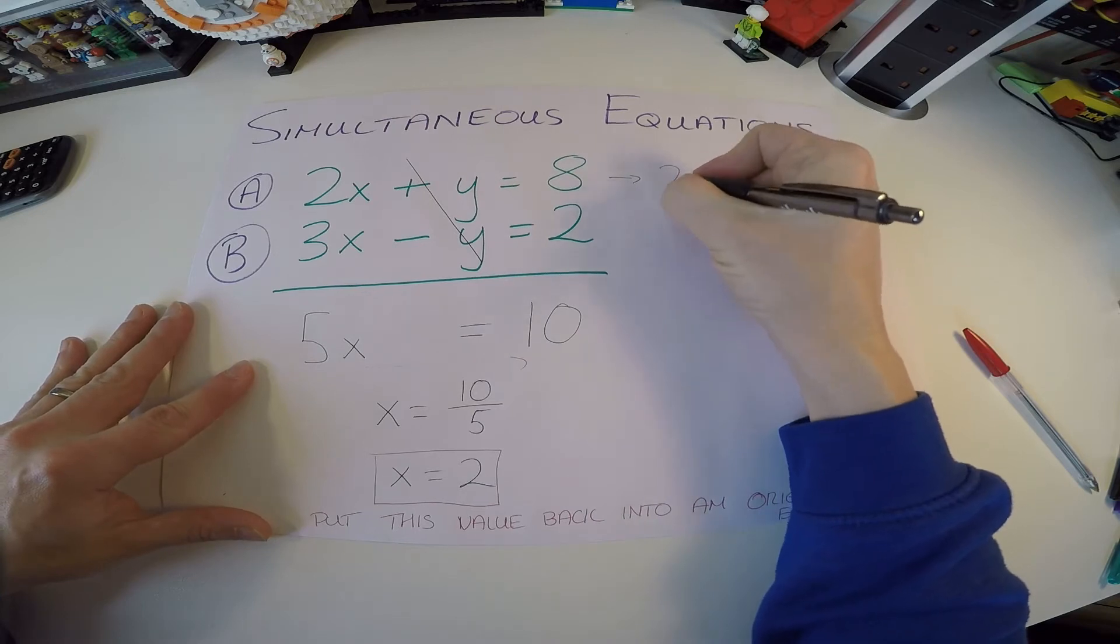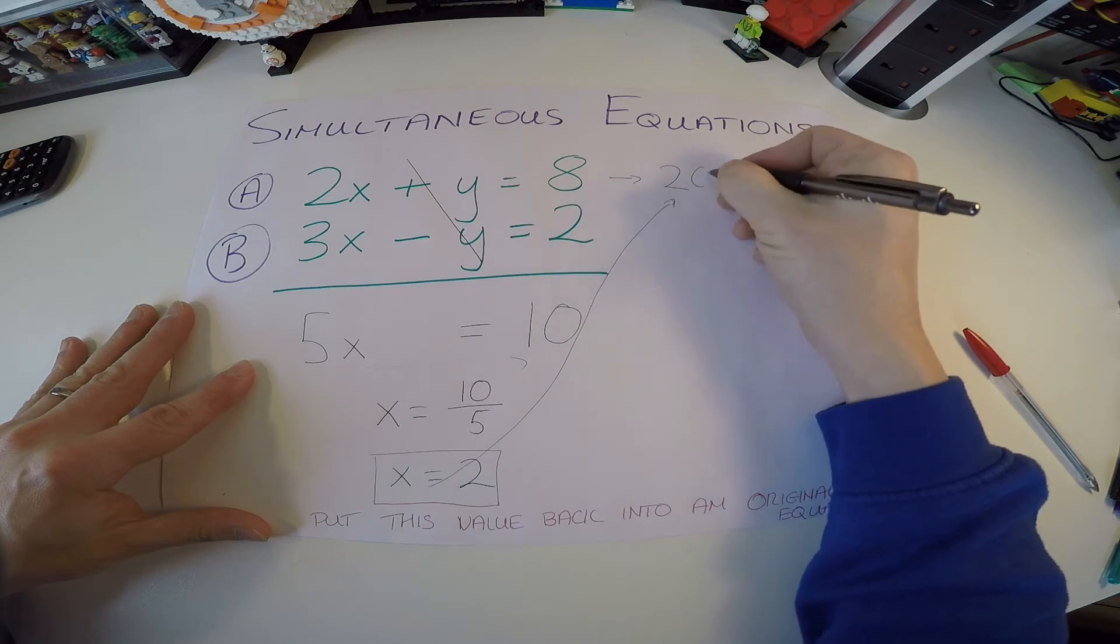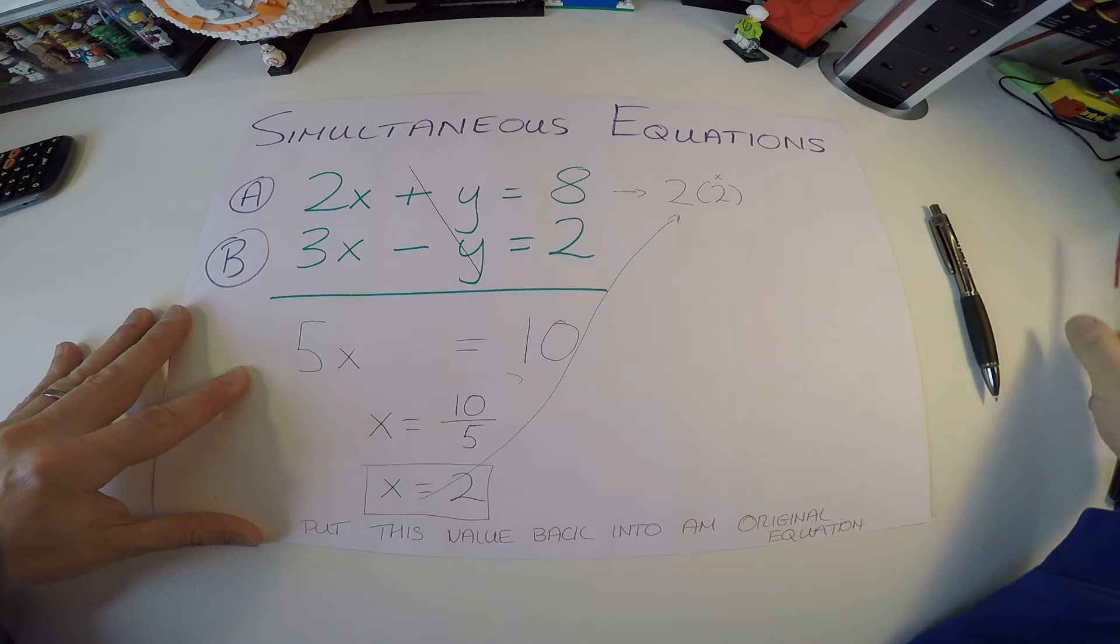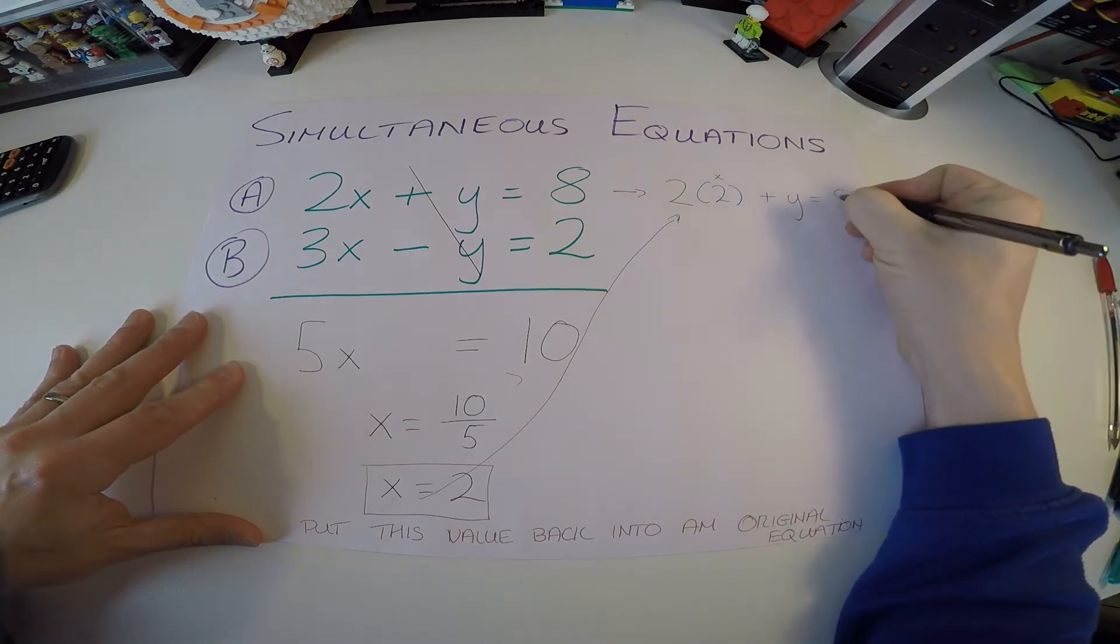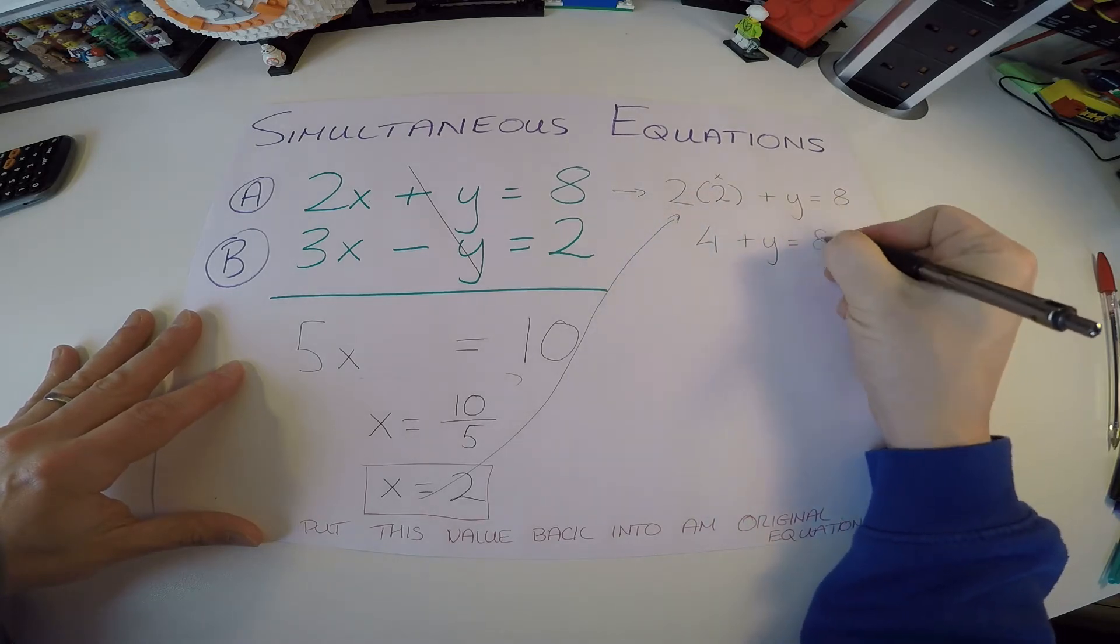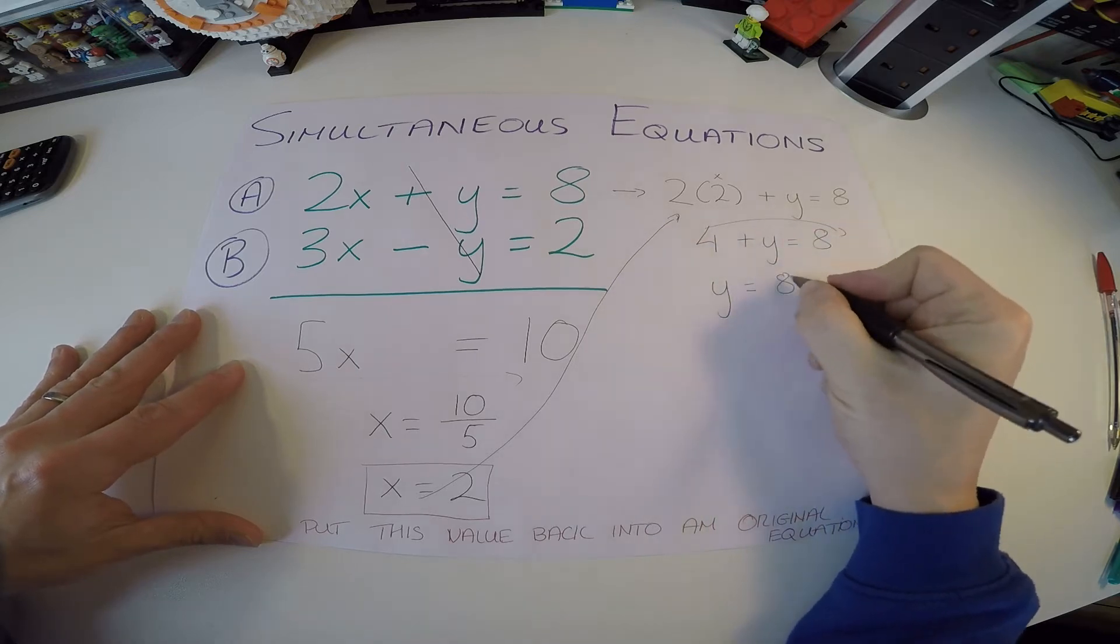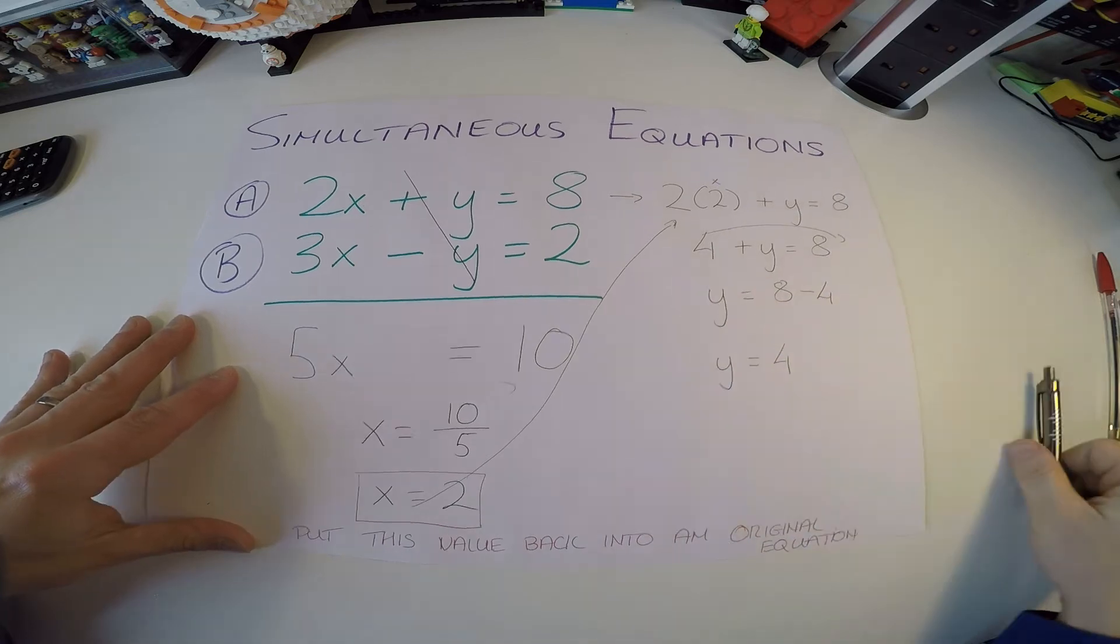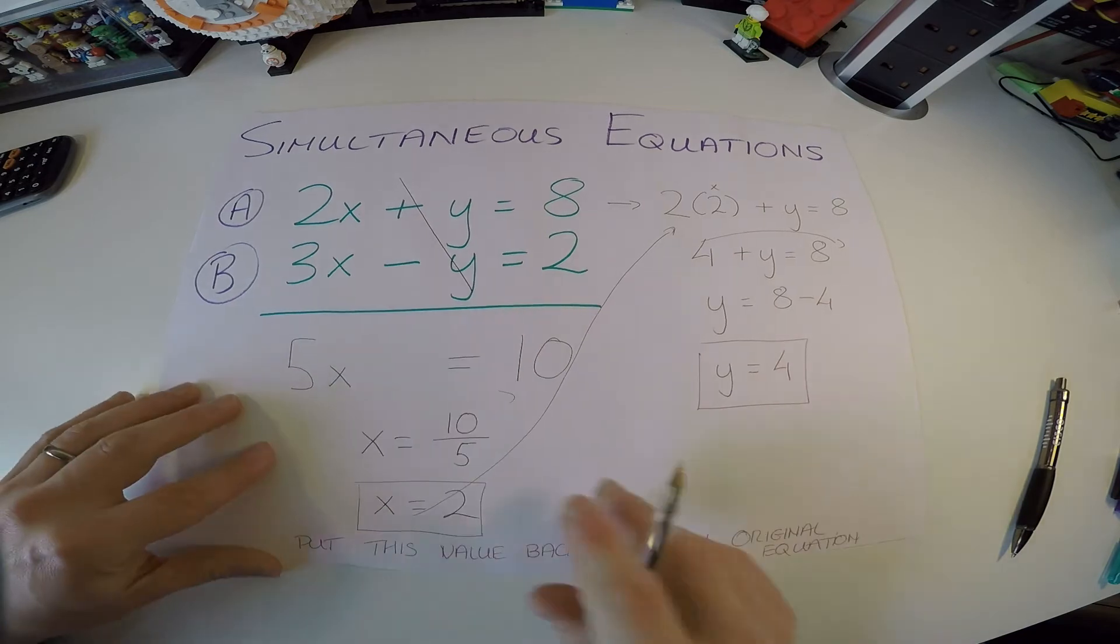So a now is 2 times x, but of course we know what x is. x is now going to be 2. This should be x, but x is now 2. Plus y is equal to 8. 2 times 2 is 4. Plus y equals 8. y is equal to 4 comes over here. He changes to a minus. And y is equal to 8 minus 4, which is 4. So that's the very first question done.